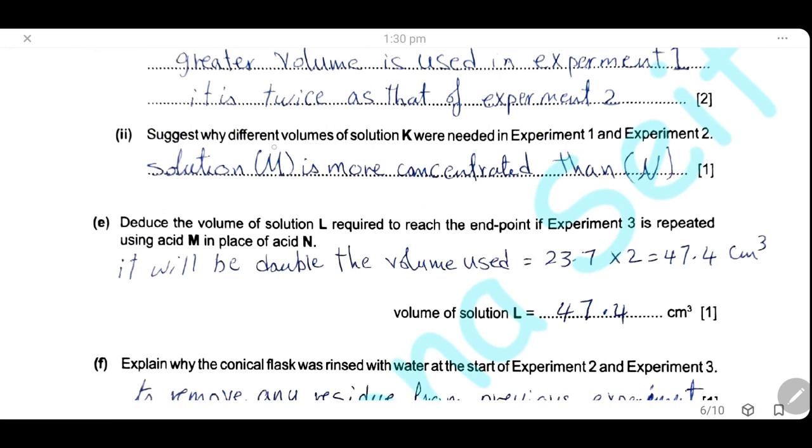Suggest why different volumes of solution K were needed in experiment 1 than in experiment 2. Because solution M, which is used in experiment 1, is more concentrated than solution N in experiment 2.